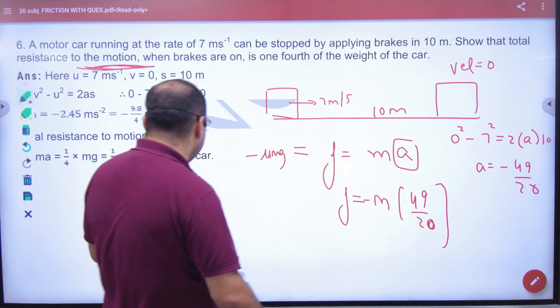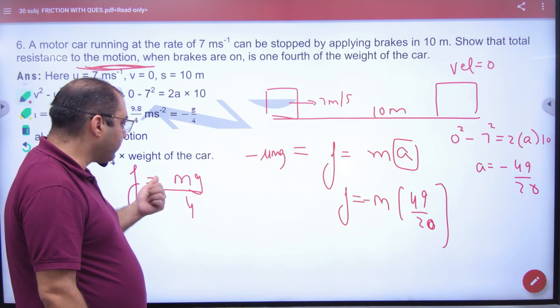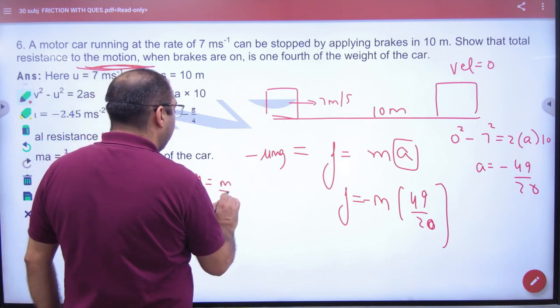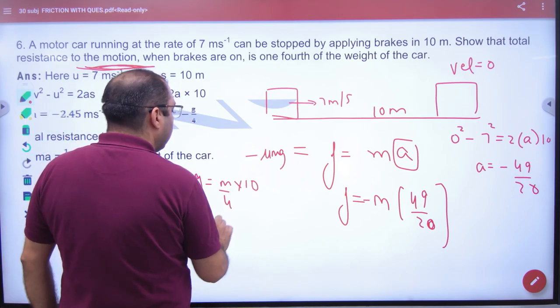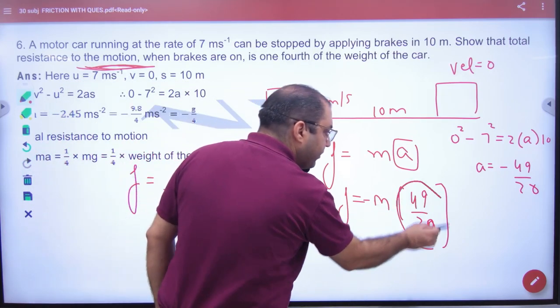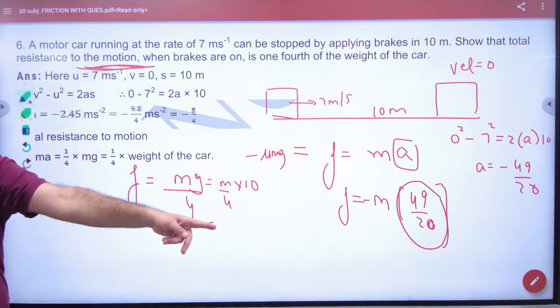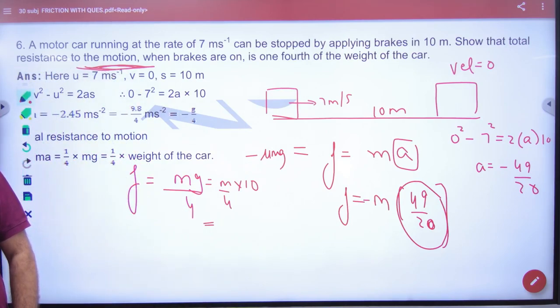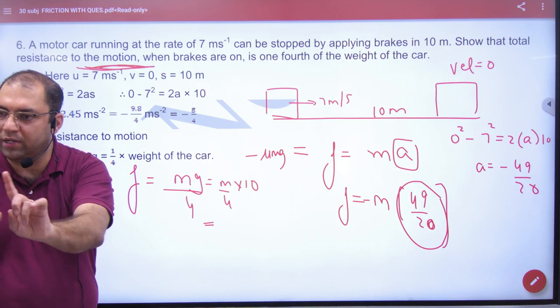Now if you calculate mg/4, that equals m/4 × g, which is m/4 × 10 = 2.5m. When you divide 49 by 20, check it - it also comes out to approximately 2.5. So the answer matches exactly for both. They're the same.